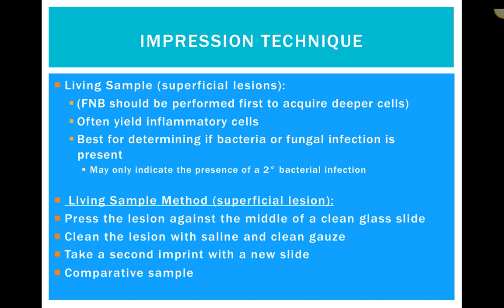We often yield inflammatory cells when looking at an impression technique on a live animal — superficial inflammation sitting very superficially on the skin. You might also see bacteria as well. The impression technique is best for determining if bacteria or fungal infection is present in a lesion. Even if you have bacteria or fungus, especially if there's any openness to it or discharge, you'll typically see inflammatory cells and secondary bacteria and fungus. It only provides you with the superficial — what's on the outside. It may only indicate the presence of a secondary bacterial infection or secondary inflammation, not what's actually causing the lesion.